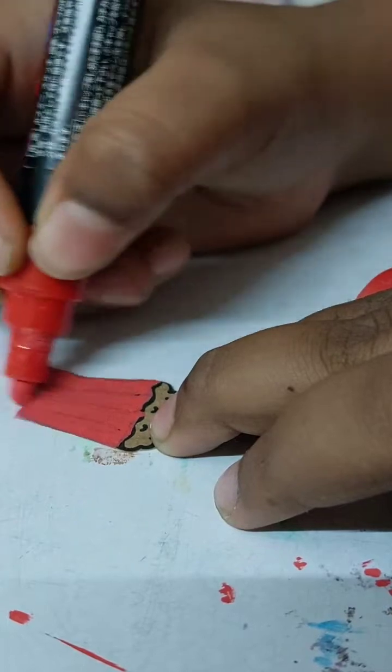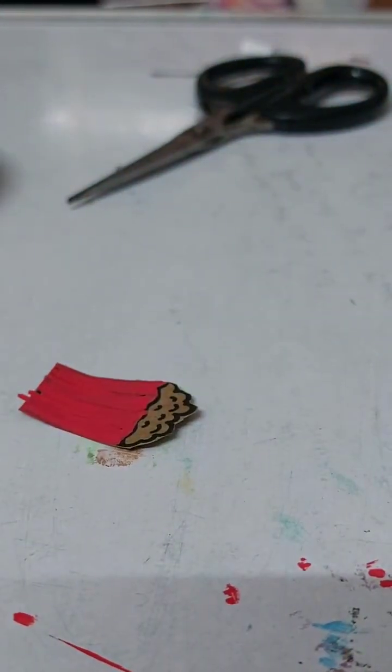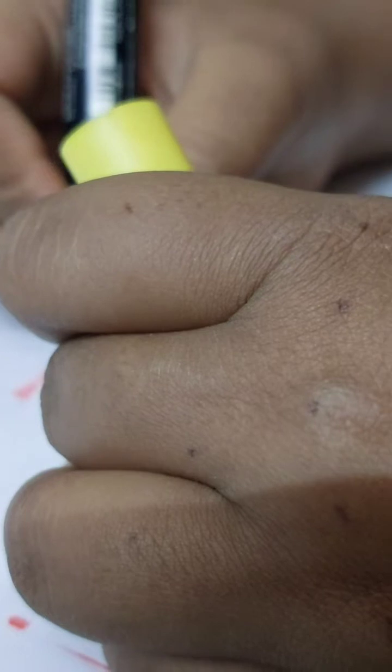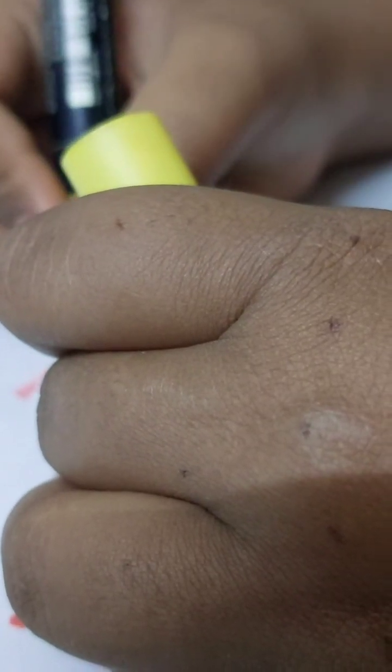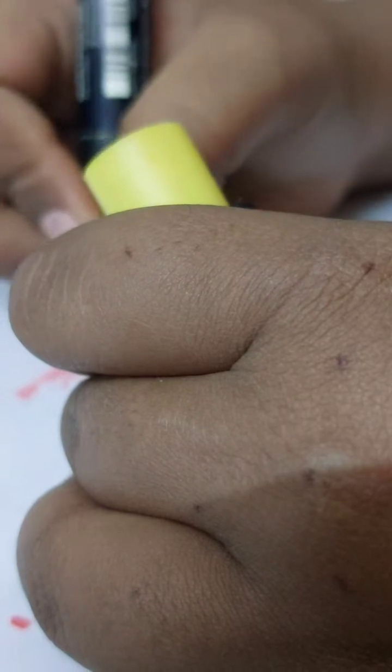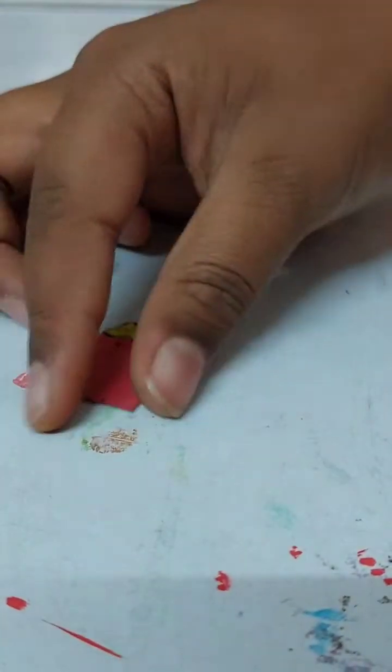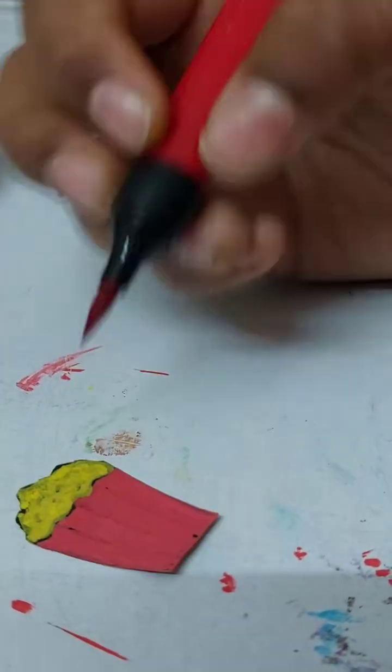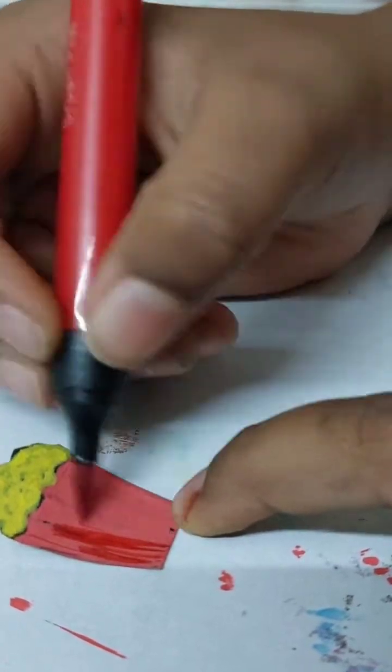This is the sauce bottle. Let's add the sauce bottle. Now I will add red with the brush pen.